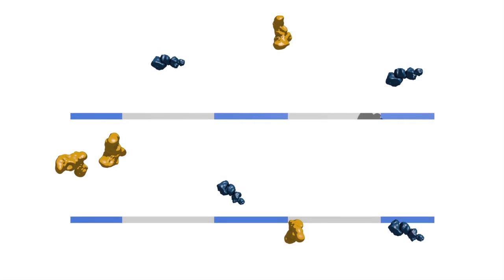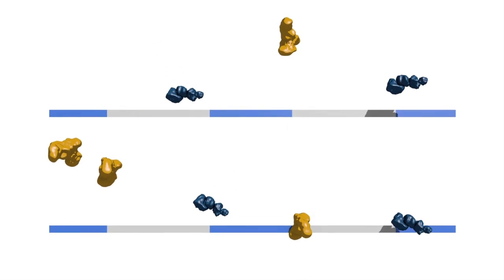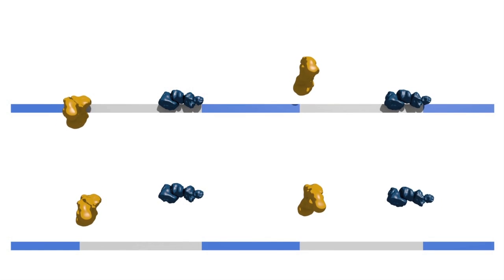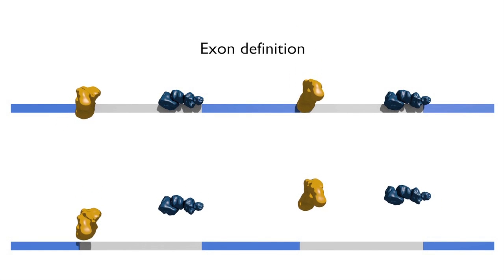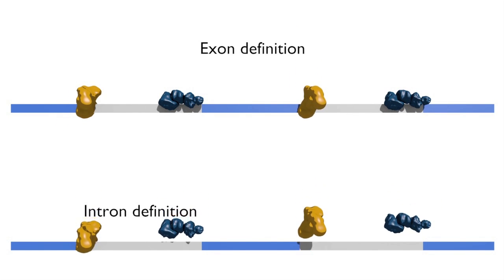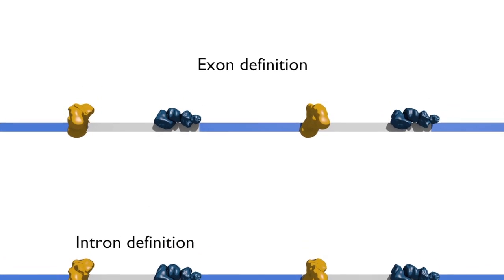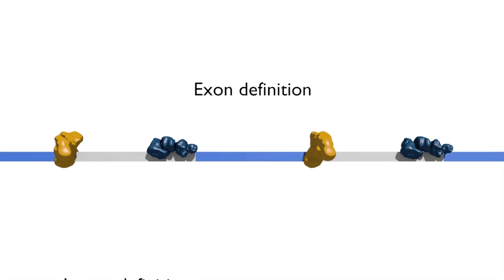There are at least two potential models for how the spliceosome correctly identifies splice sites in the sea of sequence information. These are called exon definition and intron definition. In mammals, the likely general explanation for how the spliceosome correctly identifies splice sites is through exon definition.